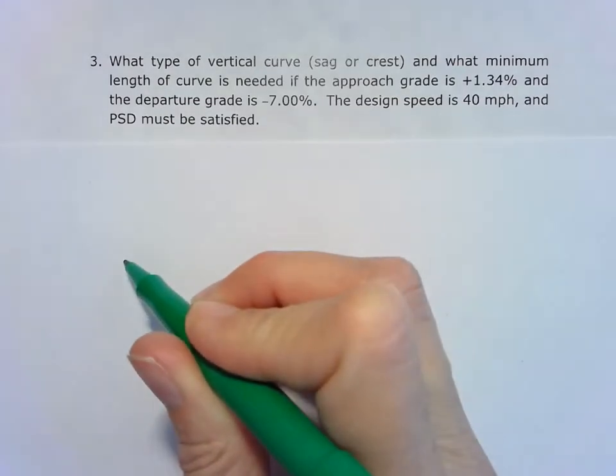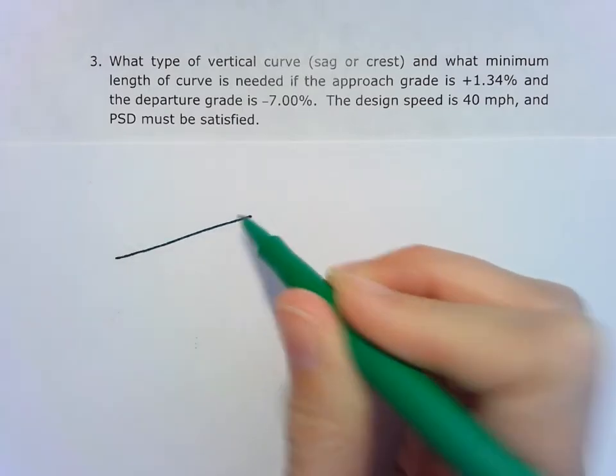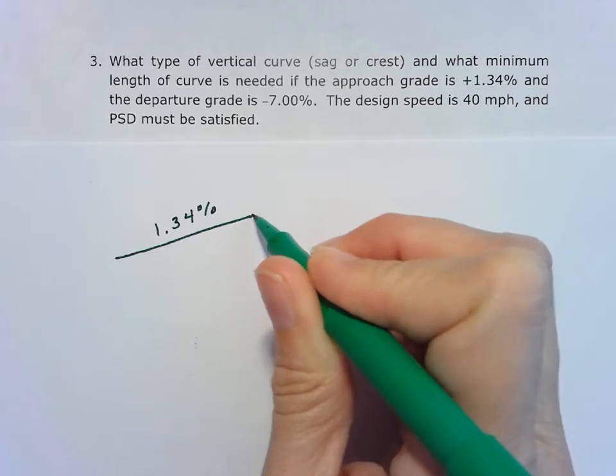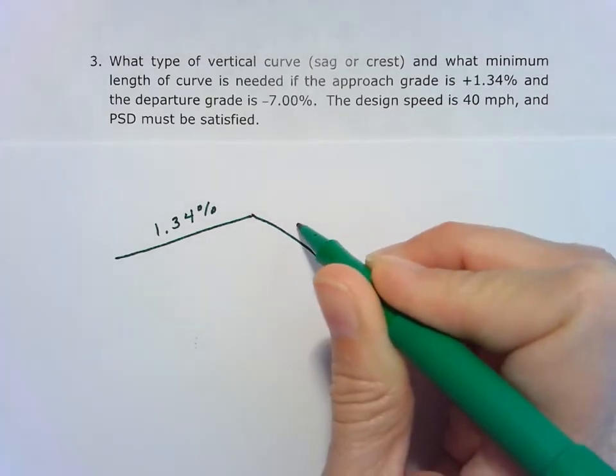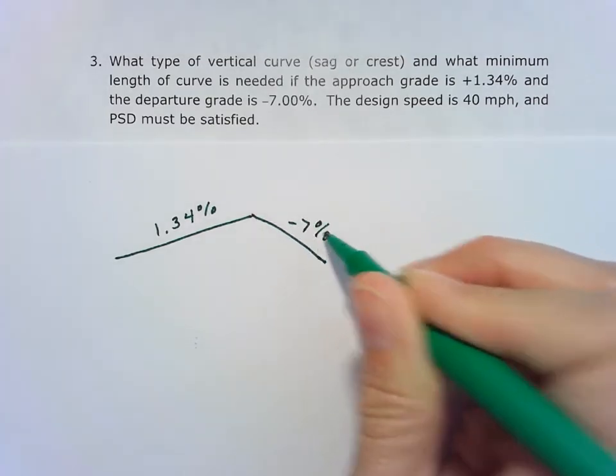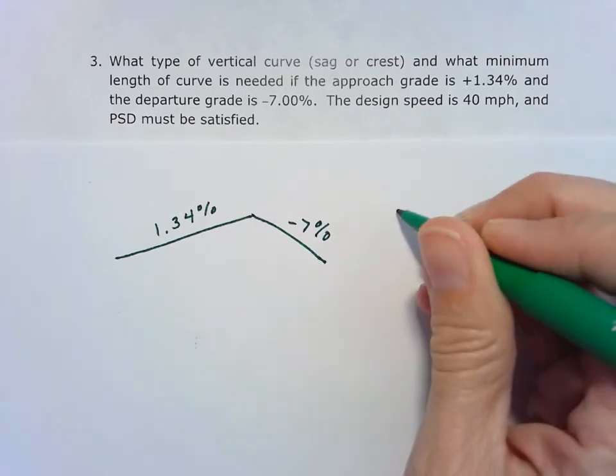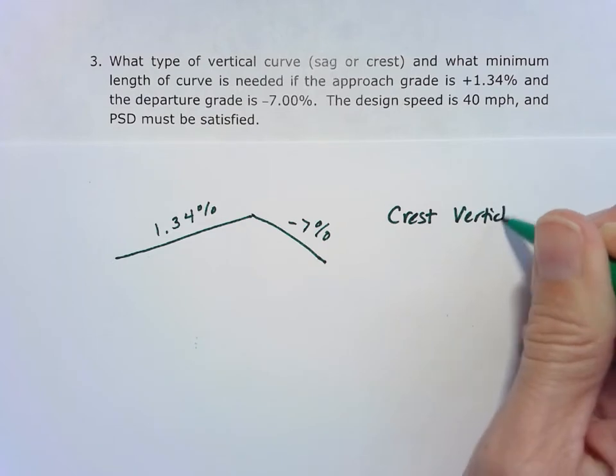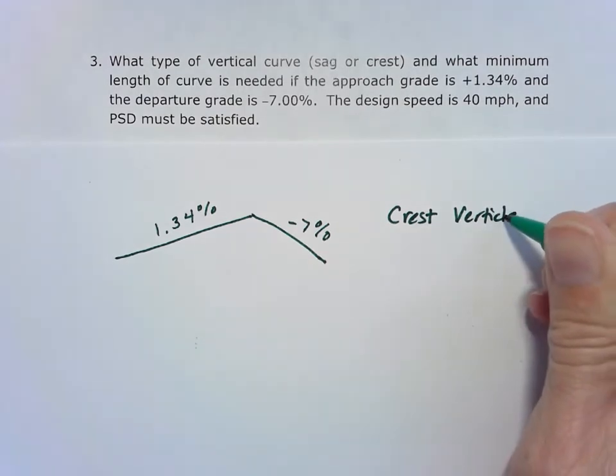Our approach is going to go up at a slight curve there of 1.34%, and then we're going to come down a lot sharper at -7%. So when we go up and come down there, that is a crest vertical curve.